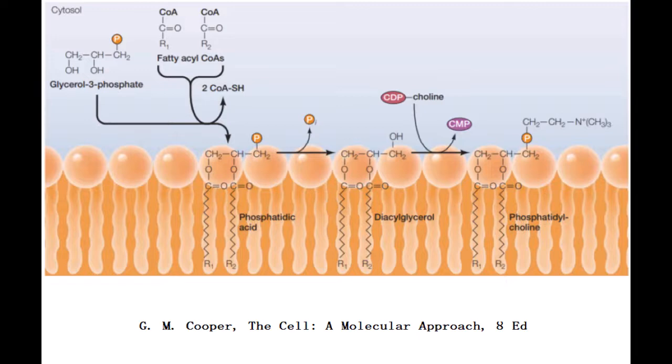Two fatty acids linked to coenzyme A carriers are first joined to glycerol 3-phosphate, yielding phosphatidic acid, which is simultaneously inserted into the membrane.